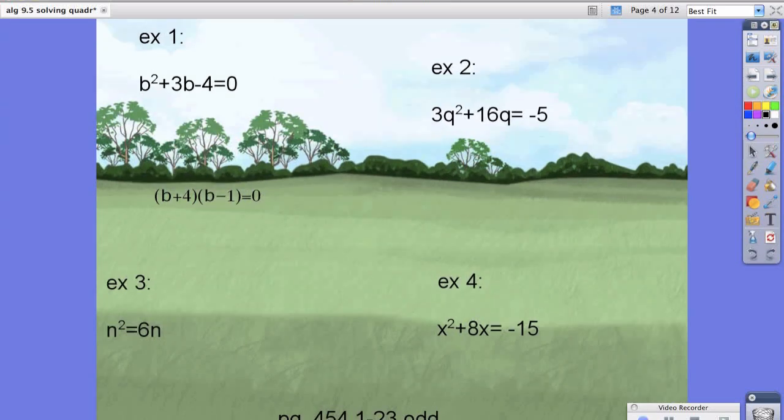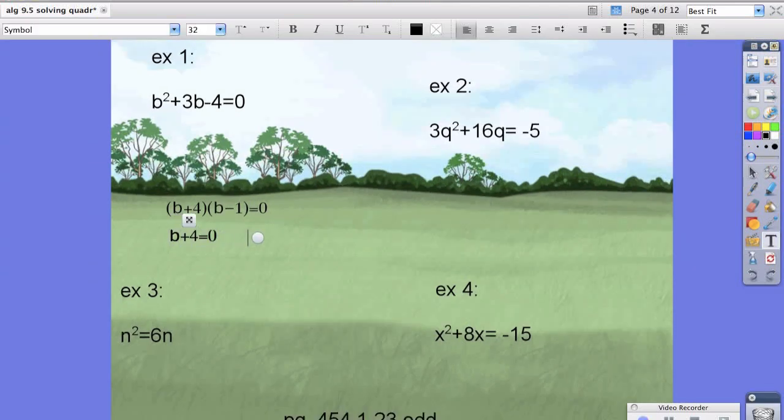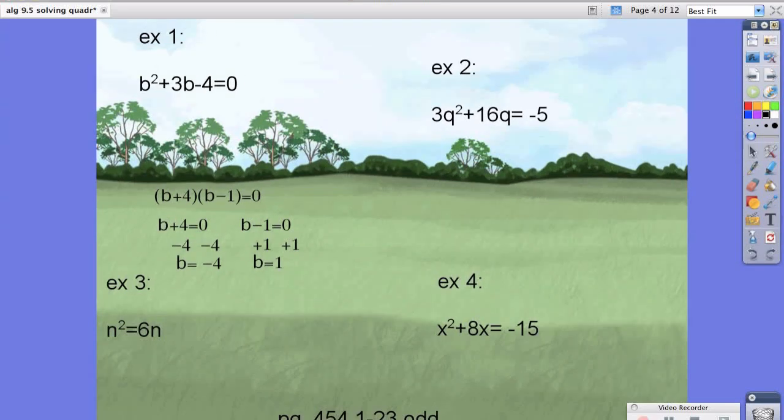Because of the zero product property, you would have gotten two things: b plus 4 equals 0, and b minus 1 equals 0. Now we have two different equations that we need to solve for. We're going to solve for the one on the left and subtract 4 from both sides. One of your answers is b equals negative 4. For the second answer, we're going to add 1 to both sides, and we're left with b is equal to 1. So here are your two solutions: b equals 1 and b equals negative 4.